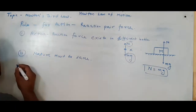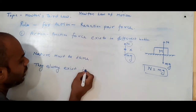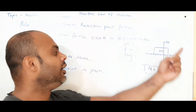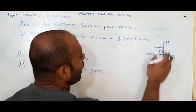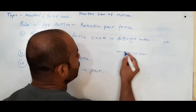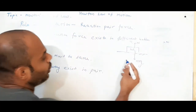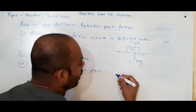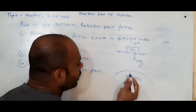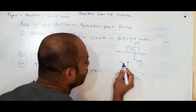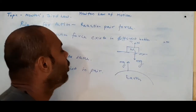The third and most important rule: they always exist in pairs. So the question arises — what is the pair of mg, and what is the pair of N? Let's understand. If I consider mg, the block has a gravitational force acting on it. Gravity is exerted by the Earth. So the force exerted by the Earth on the block, and the reaction is the force exerted by the block on the Earth — that becomes the action-reaction pair.